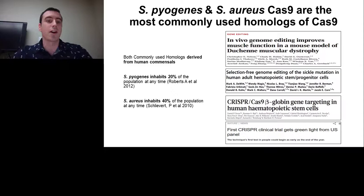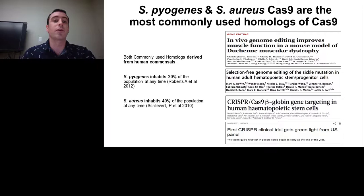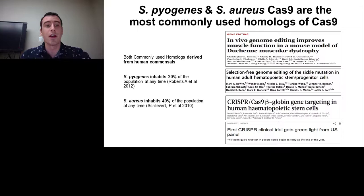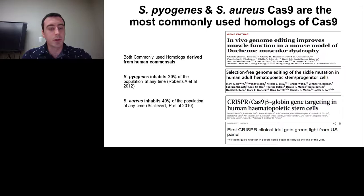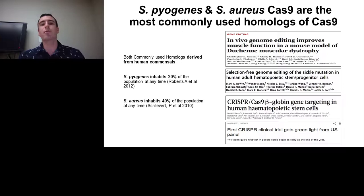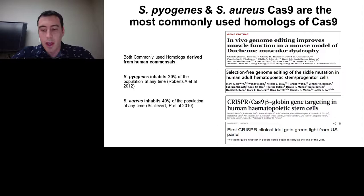Many groups are rushing forward to apply CRISPR-Cas9 to treat diseases such as Duchenne muscular dystrophy and sickle cell disease, and the first clinical trial involving CRISPR-Cas9 has been approved in the U.S. However, the most common homologues of Cas9 are derived from Streptococcus pyogenes and Staphylococcus aureus — the bacteria that cause strep throat and staph infections, respectively. I'll refer to these as Sp-Cas9 and Sa-Cas9 for the rest of this talk. Sp-Cas9 is typically used for in vitro editing, while Sa-Cas9, being smaller, is more easily packaged into viral vectors for in vivo delivery.